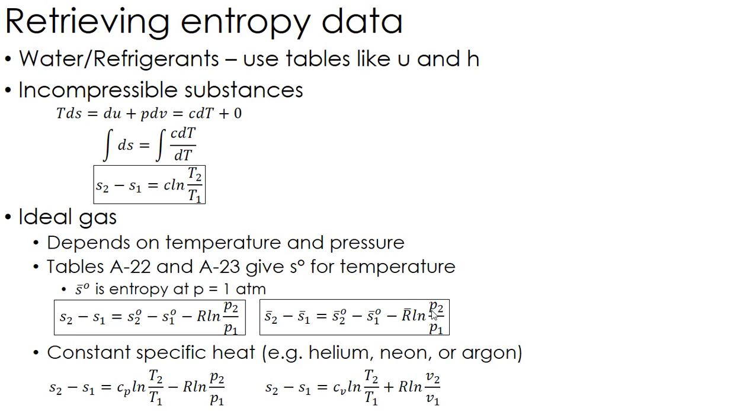Now, if I have constant-specific heat, which I don't usually have, the only time I really have this are helium, neon, argon, that sort of thing. I don't have tables for these. Again, if you have tables, use the tables. This is the bottom line of this.